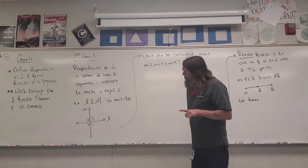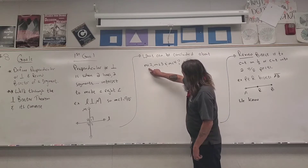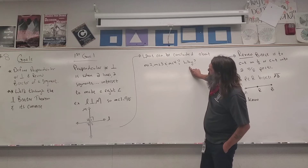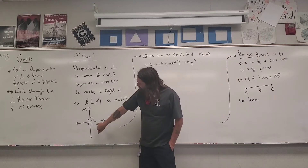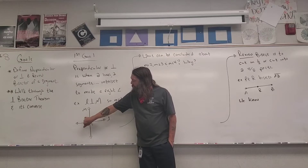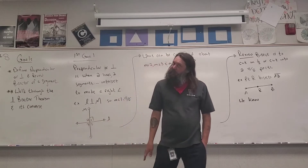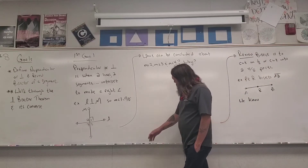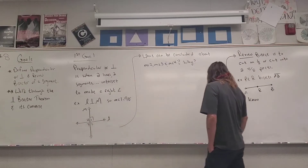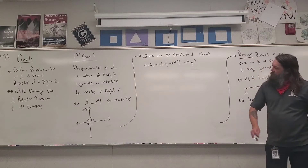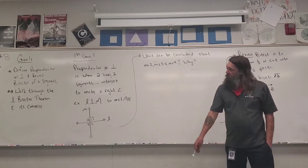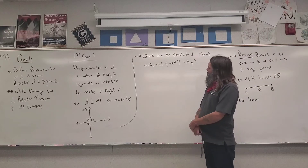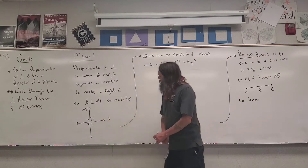Let's look at this a little bit further. What can be concluded about the measure of angle two, the measure of angle three, and the measure of angle four — and why? Maybe hit pause and see if you can come up with your own conclusion, spend a minute or two on that, and then jump back in to see if we're in agreement. I'm going to start with the measure of angle two. Angle one and angle two are linear pairs.